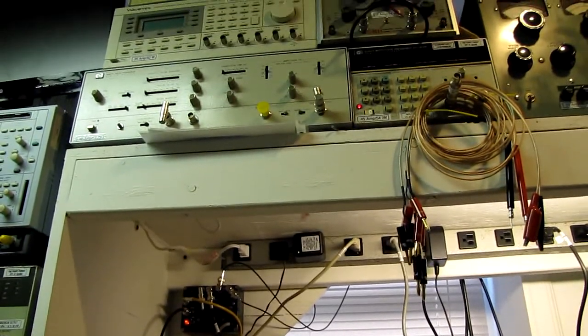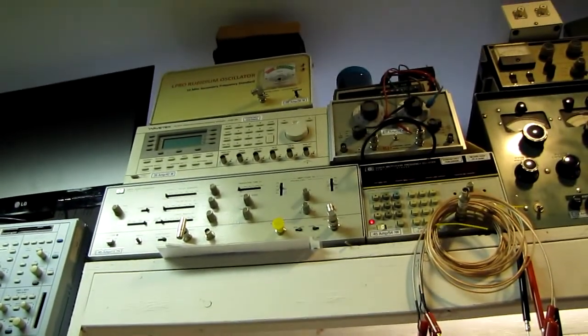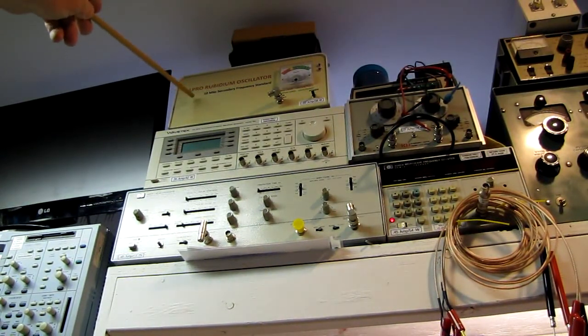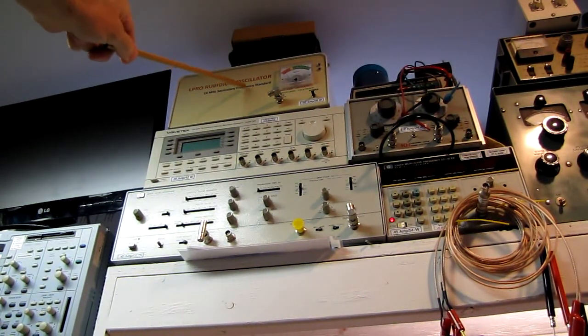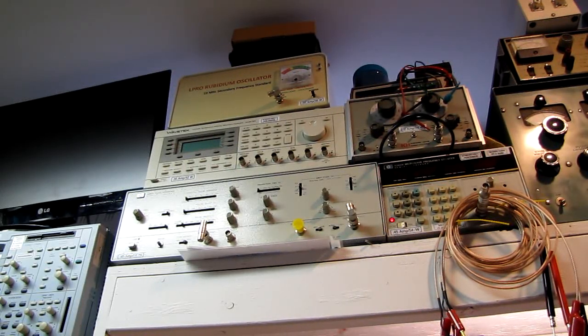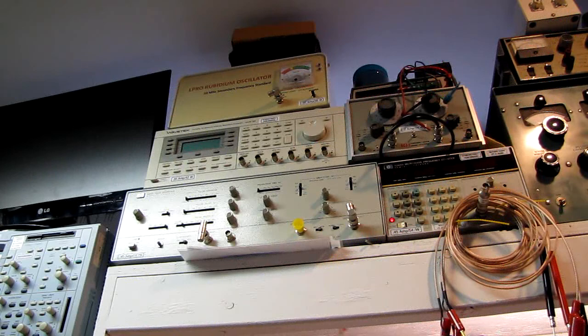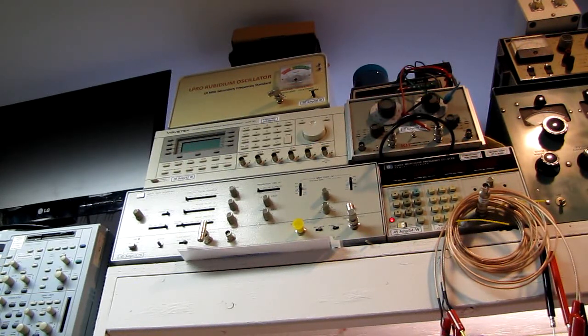In fact, way up there on the top is my old rubidium standard, and I used this for a number of years. I bought that on eBay. That was about a hundred bucks for just the standard. Then I built the enclosure. I put a lamp, a meter to monitor the lamp voltage, a power supply is built in, yada yada.